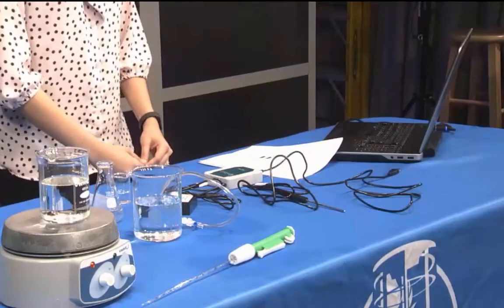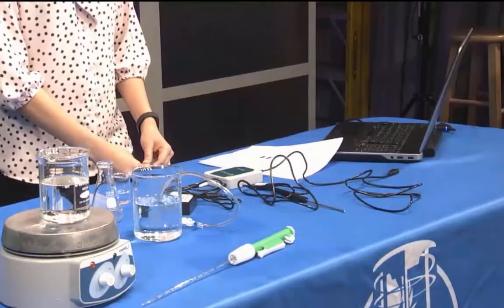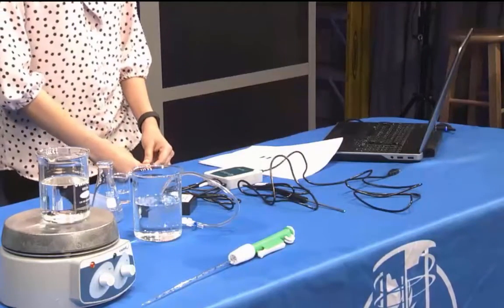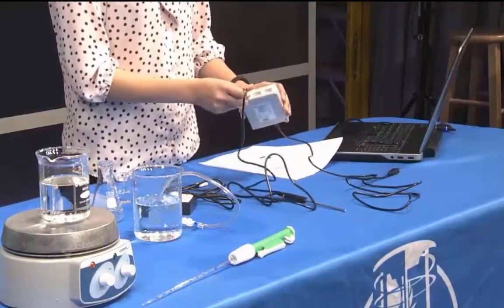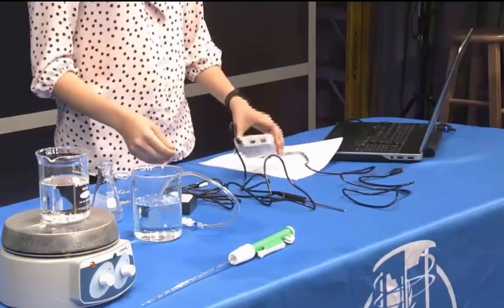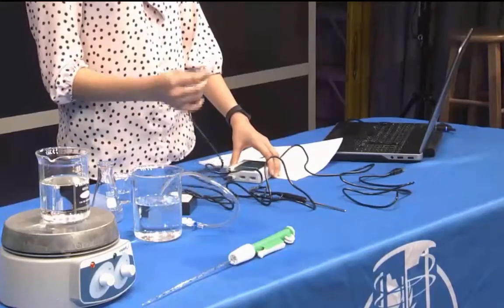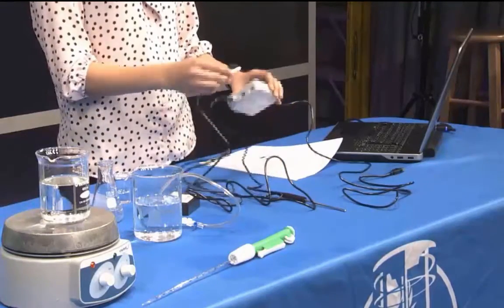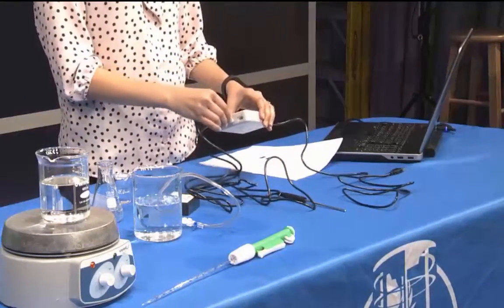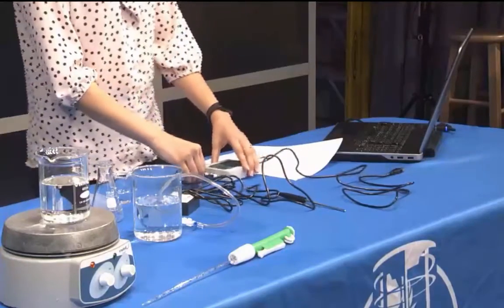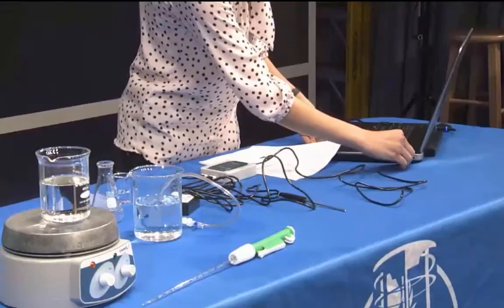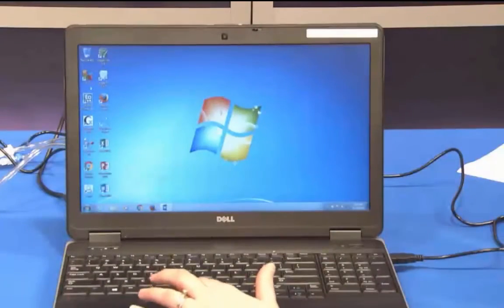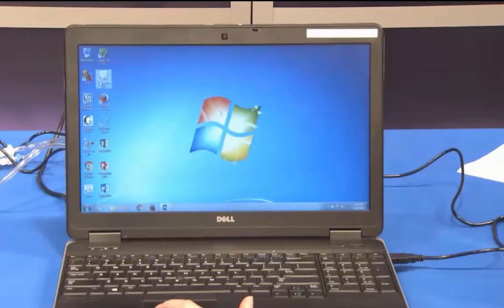First, you need to measure a room temperature and pressure reading. To do this, connect the temperature probe to one of the channels of the LabQuest box, then connect the pressure sensor to another channel of the LabQuest box, and then connect the LabQuest box to the computer.